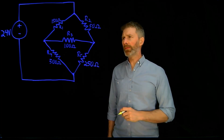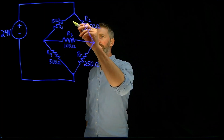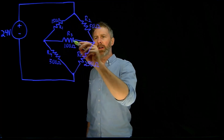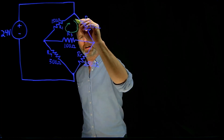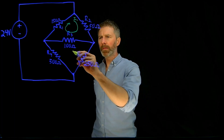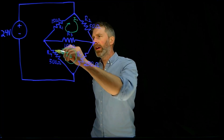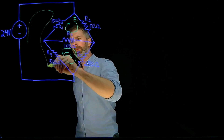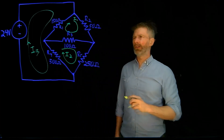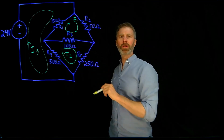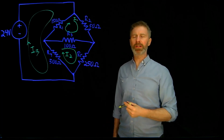The first step when doing the mesh current analysis is to identify all of the loops in the circuit, and we have three loops. I'm going to identify the first loop as I1, the second loop as I2, and the loop with the 24 volt source as I3. You'll note I've made all of these circuit loops in the clockwise direction — they don't all have to be clockwise, I just did that for consistency's sake.